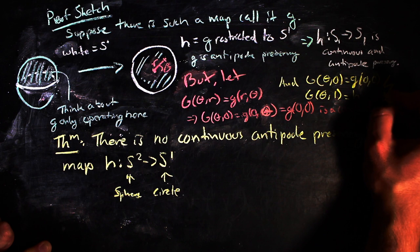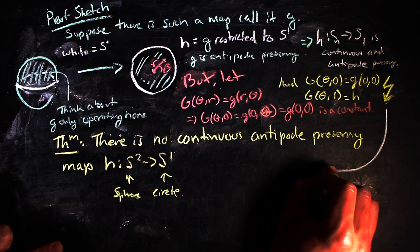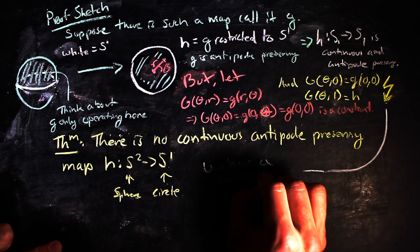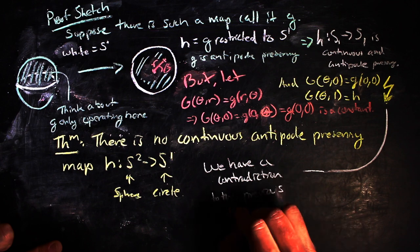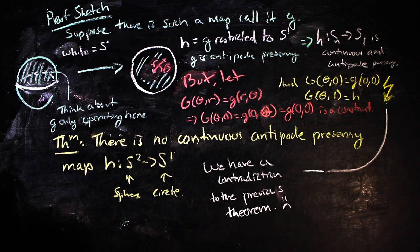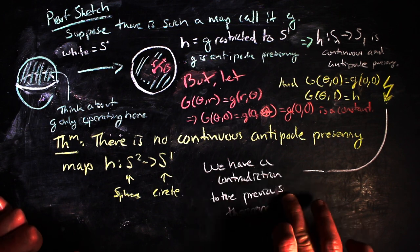And we have that big G of theta and 1 is equal to H. But this is a contradiction because then big G would be a homotopy between H and a constant. But we already know that that can't happen. And so there is no continuous antipode-preserving map from the sphere to the circle.